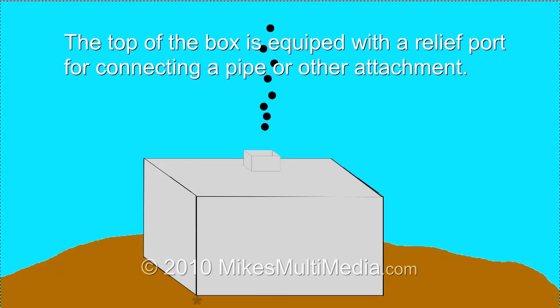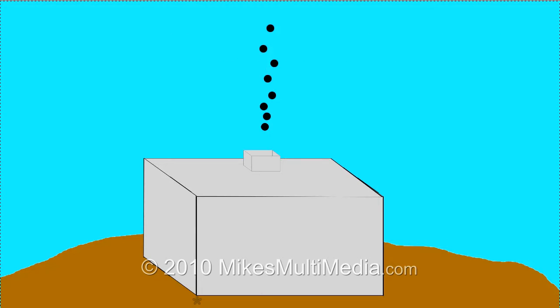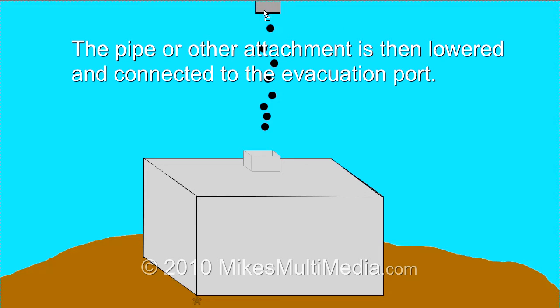The top of the box is equipped with a relief port for connecting a pipe or other attachment. The pipe or other attachment is then lowered and connected to the evacuation port.